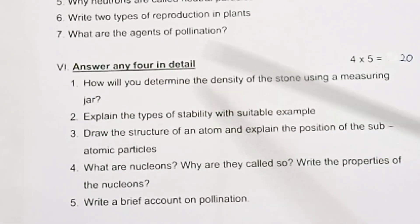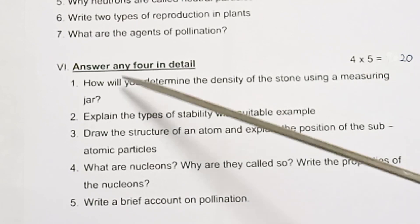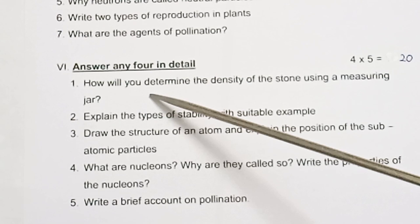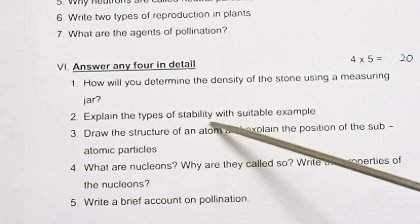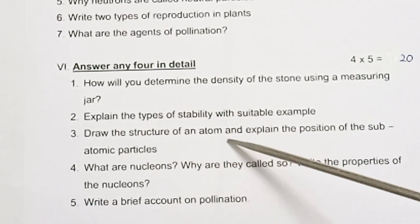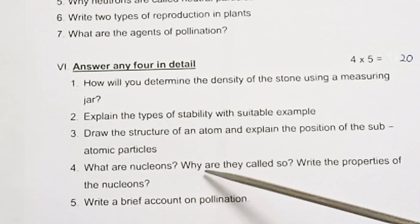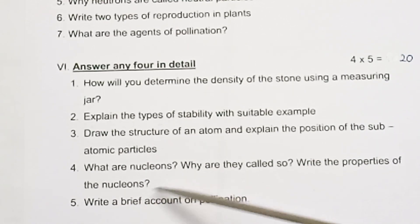Answer any 4 in detail, 4 into 5 equals 20. First one: How will you determine the density of the stone using a measuring jar? Second one: Explain the types of stability with suitable example. Draw the structure of an atom and explain the position of the subatomic particles. What are nucleons? Why are they called so? Write the properties of the nucleons. Write a brief account on pollination.